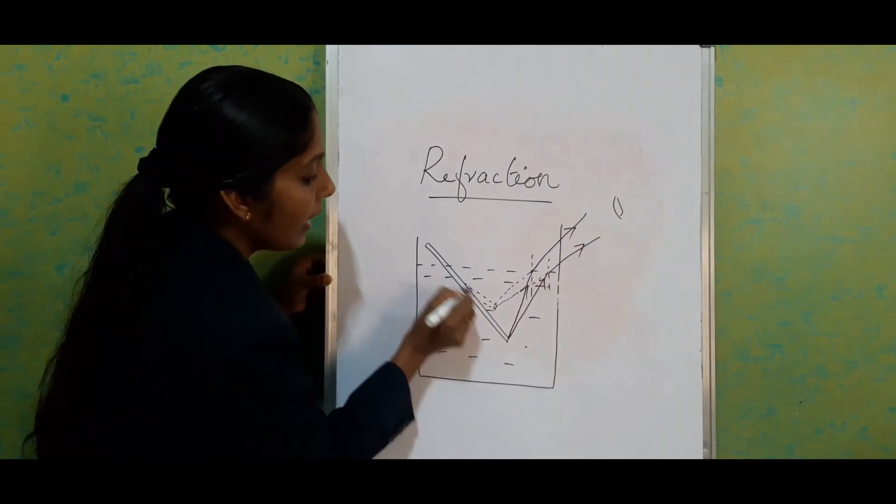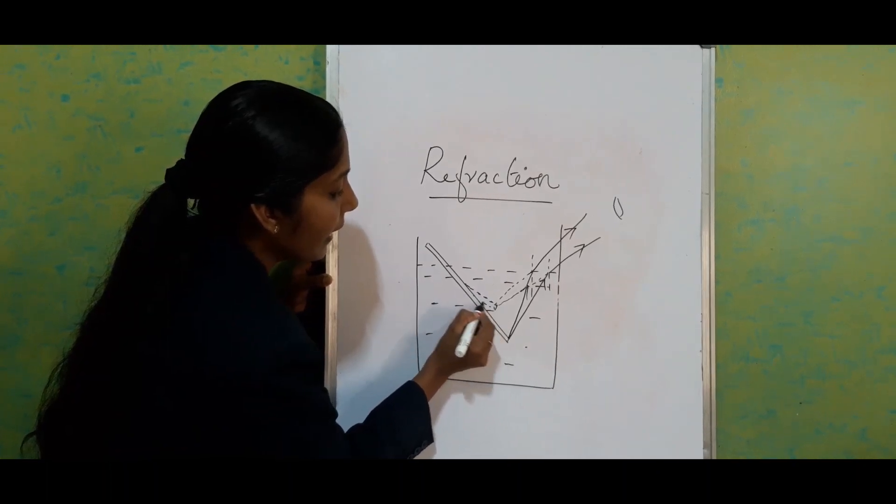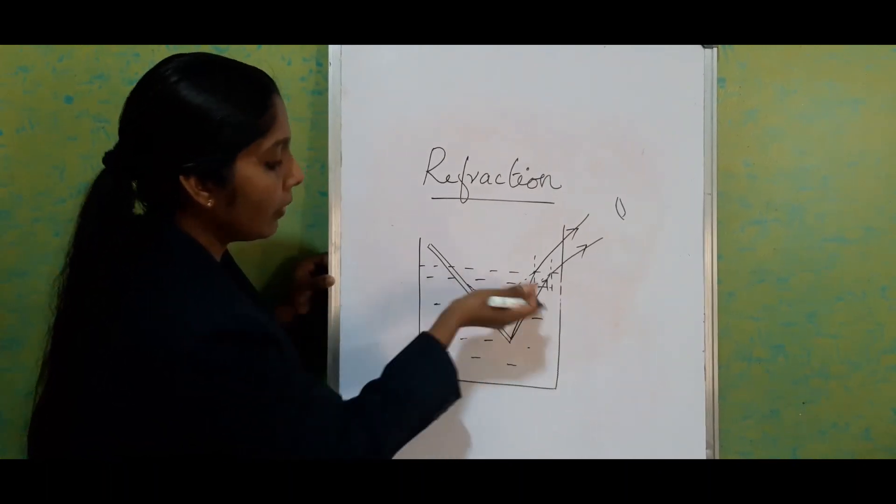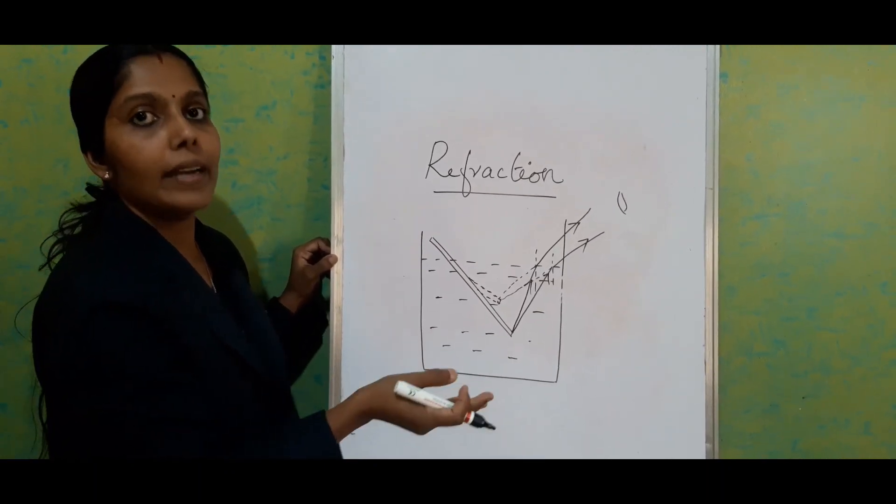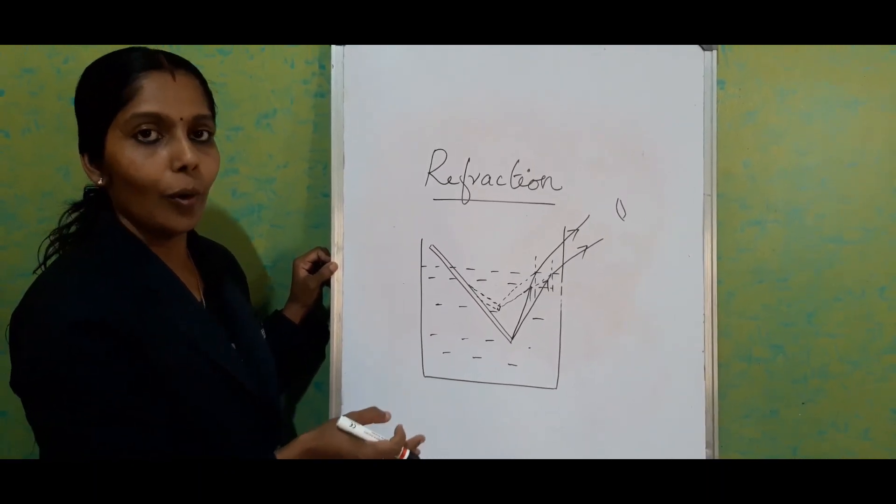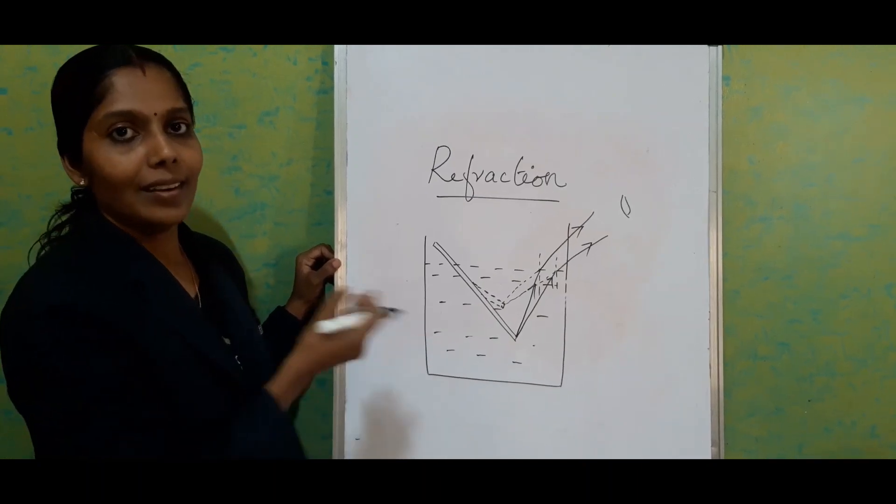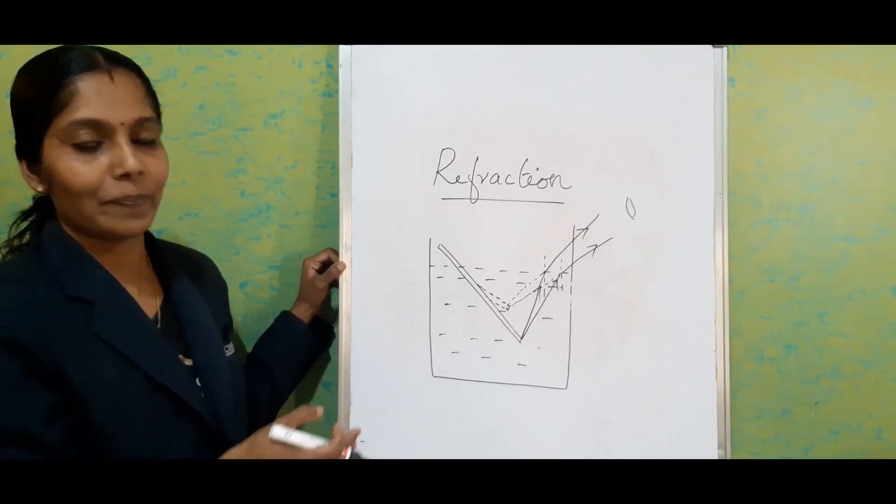But when we are watching from outside, this is the way we are getting the image or the pencil. This is what happens in the case of that experiment, the pencil-water experiment. Hope all of you understood the experiment and the concept. Thank you.